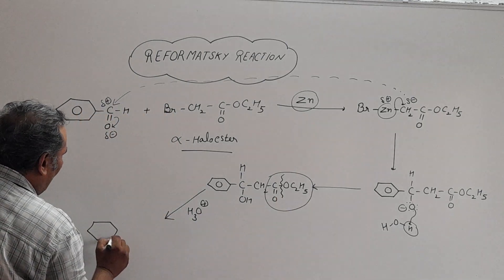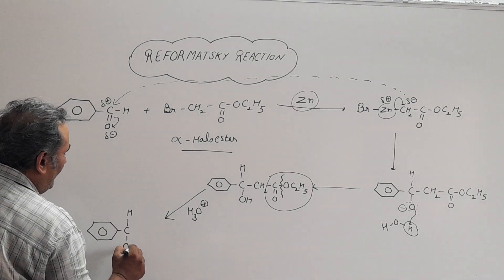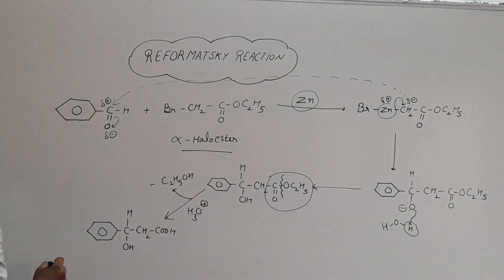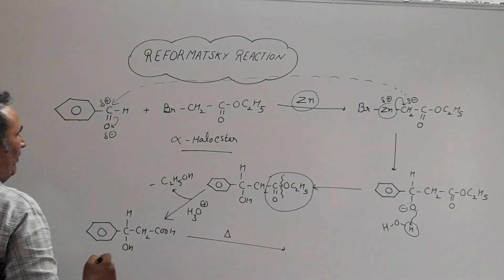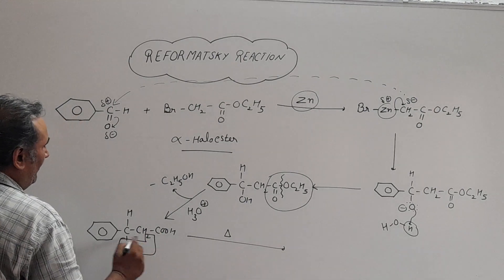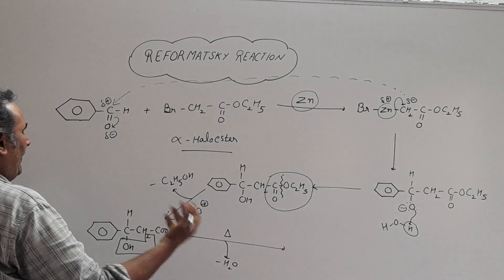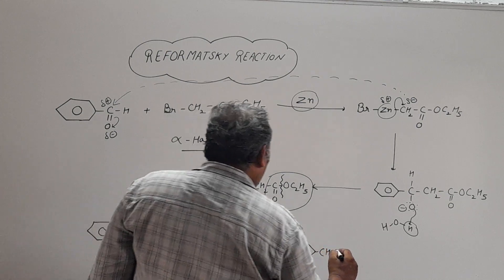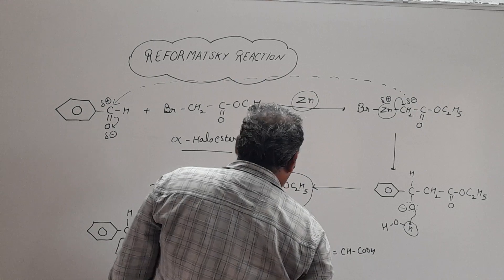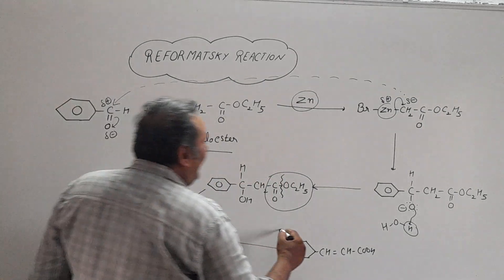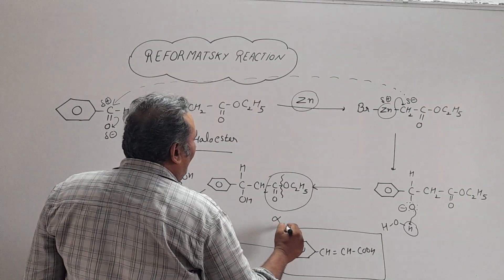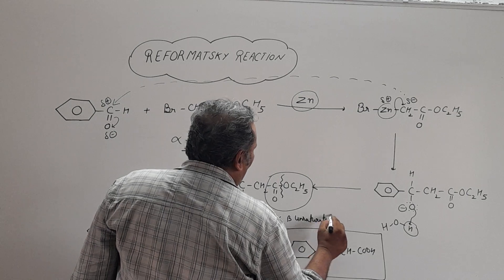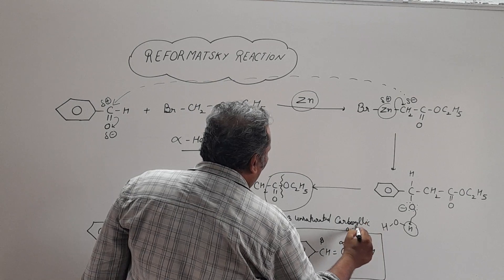After acidic hydrolysis, we get CH(OH)-CH₂-COOH. When we heat this compound, dehydration occurs via beta-elimination, and the water molecule is removed. Our final product is then CH=CH-COOH, which is an alpha-beta unsaturated carboxylic acid.